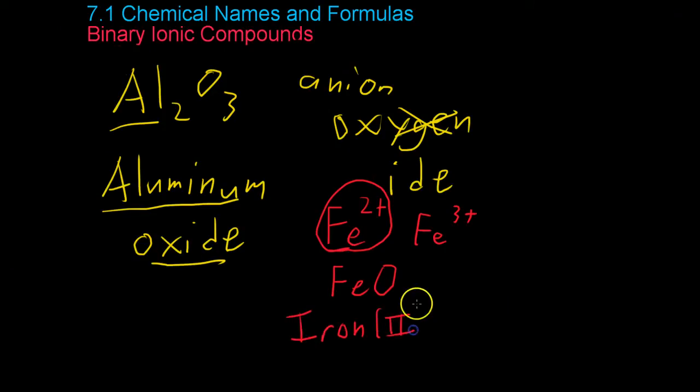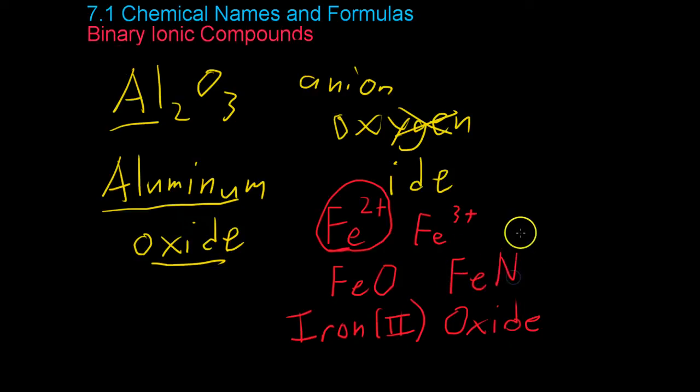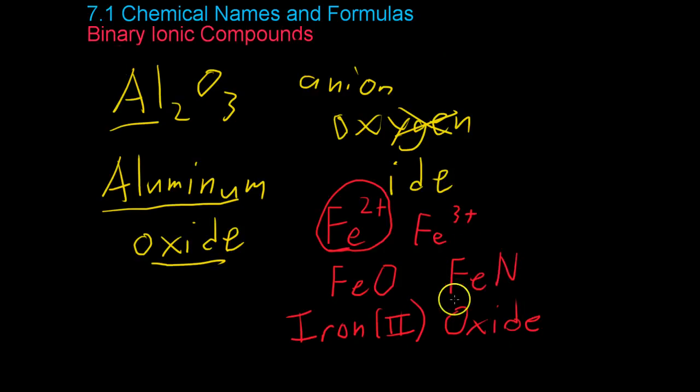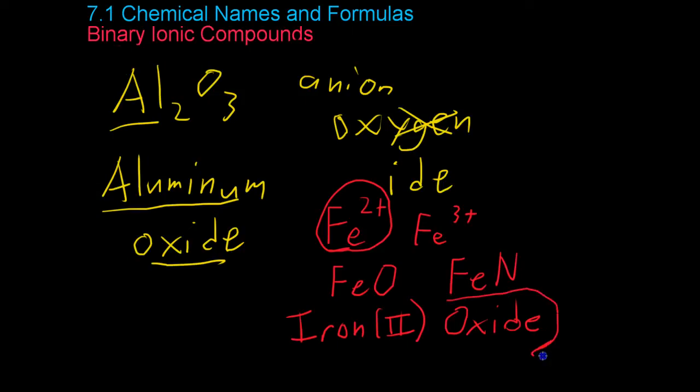You would have to write iron with the Roman numeral, like we discussed previously, and then just the name of the anion, in this case oxide. Or if you were to do iron nitride, you would again have to specify. In this case, this compound would be called iron(III) nitride.